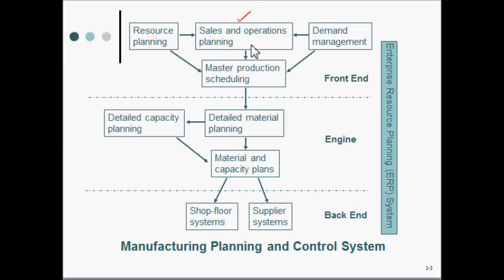The manufacturing, planning, and control system relies on, number one, demand management, and number two, the resource planning module. When we say demand management, it refers to forecasting, but it also refers to the idea of order-taking and order-promising, because at times companies are not working on forecast alone. They might be taking orders as and when an important customer comes up with a new requirement. Sometimes you have to promise an order to be competitive, and all of that falls within the demand management module.